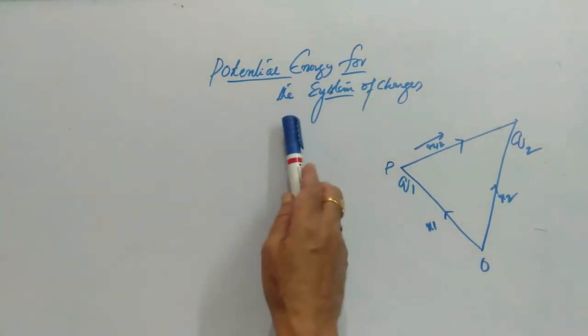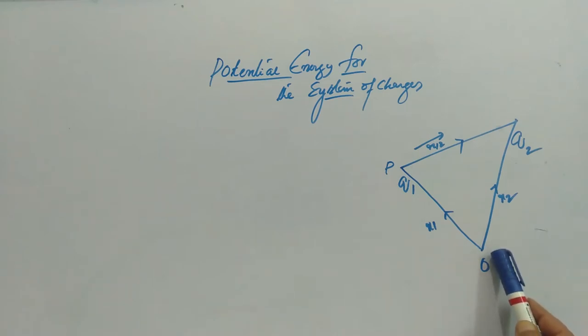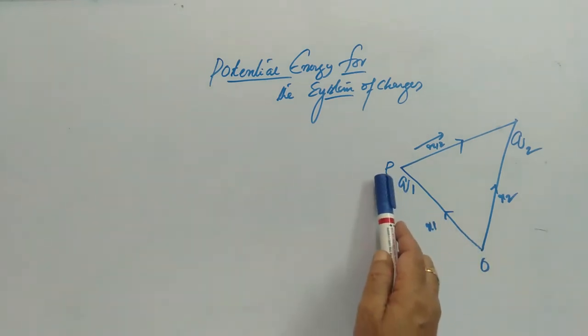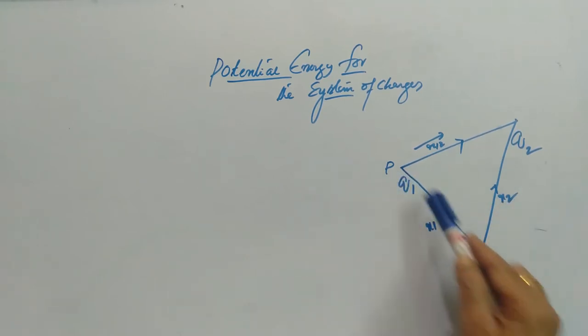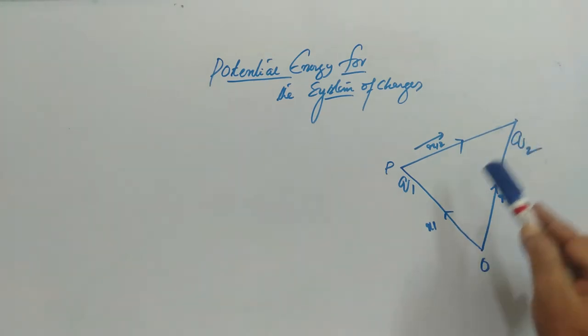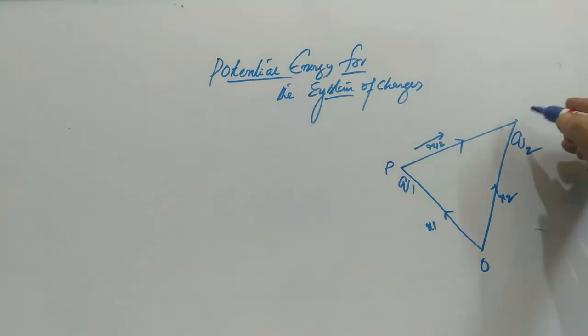Potential energy for the system of charges. Let us consider O be the origin and P be any point where Q1 is located. The position vector is R1, this position vector is R2, and then R12 is the position vector from P to the location of Q2.